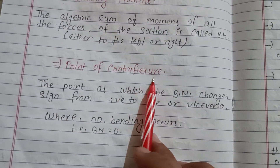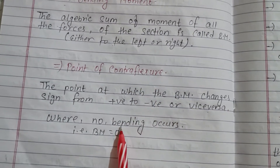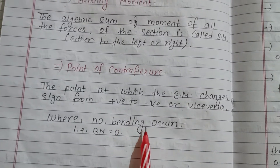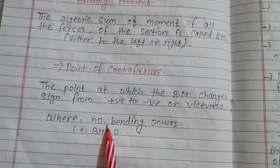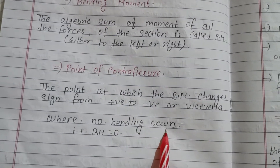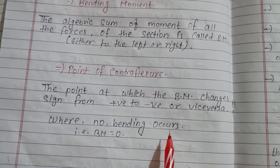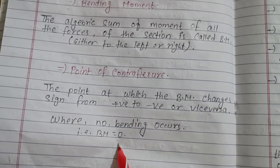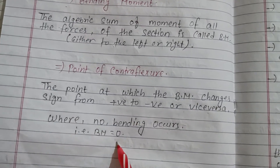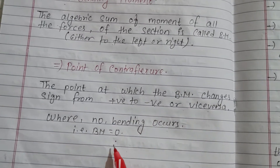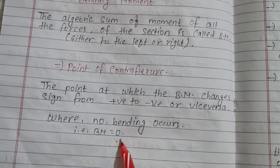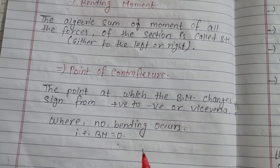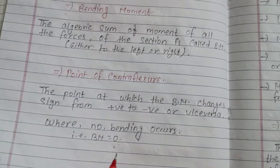The point of contraflexure is also the point where the bending moment is equal to zero — that is, the bending moment equals zero at the point of contraflexure.